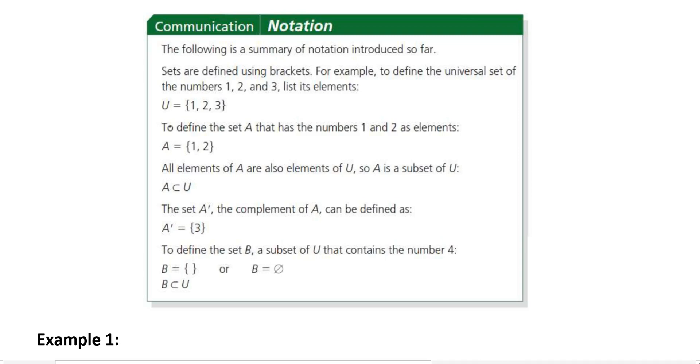To define a set A, we use 1, 2, and brackets there. And so, we say that A is a subset of the universal set. It's a smaller portion of the set that was already introduced. And the symbol that we use for subset is this sideways U. All elements of A are also elements of U, so A is a subset of U, and that's the notation.